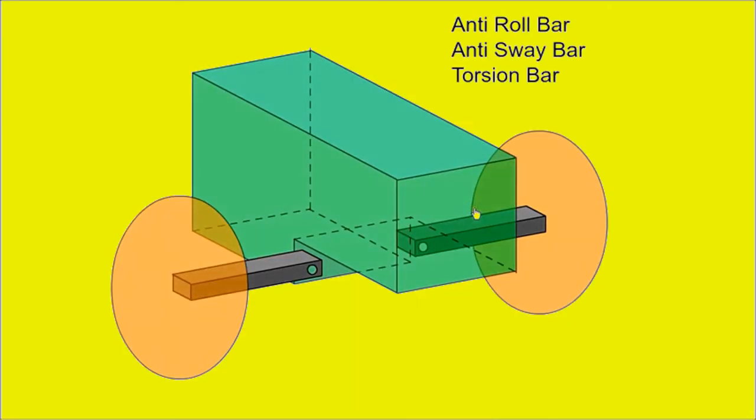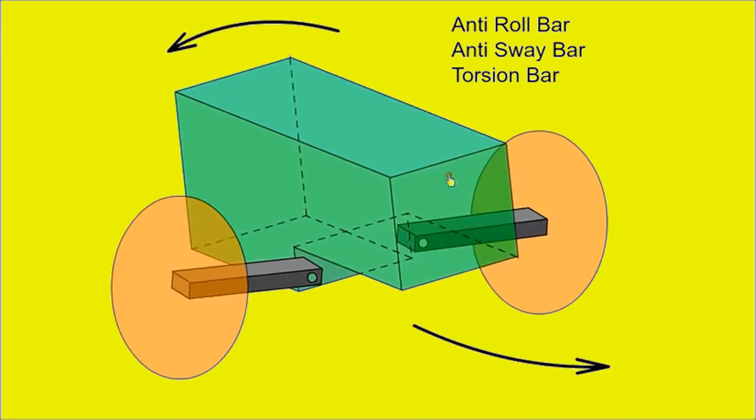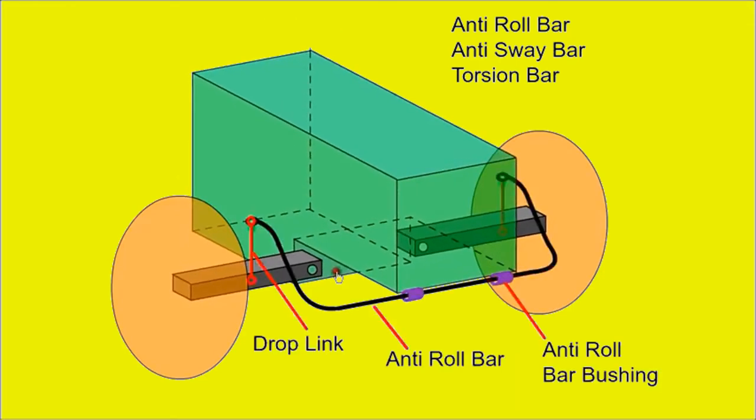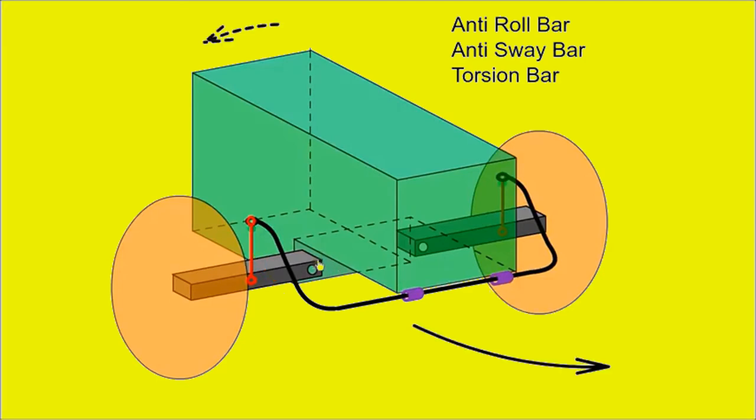When the car corners the body tends to roll or sway. In this demo we have omitted the springs and dampers for clarity. An anti-roll bar, sway bar or torsion bar connects left and right side suspension to each other. As the suspension is compressed on one side it exerts a twisting force on the torsion bar transferring some of the load to the other wheel, reducing body roll.